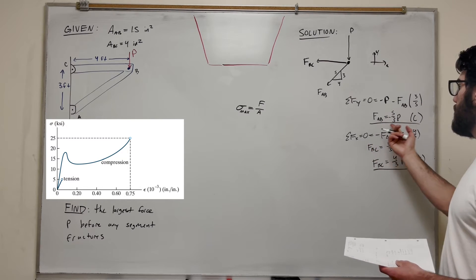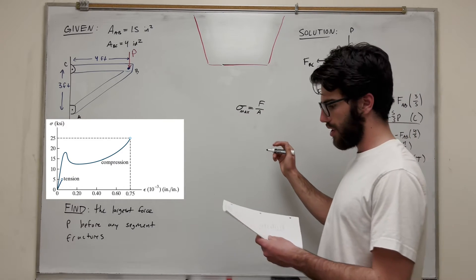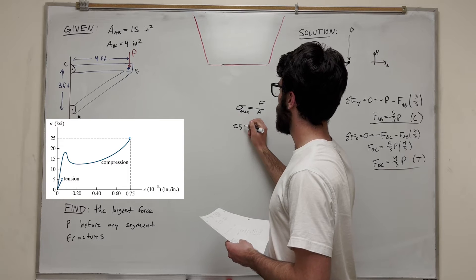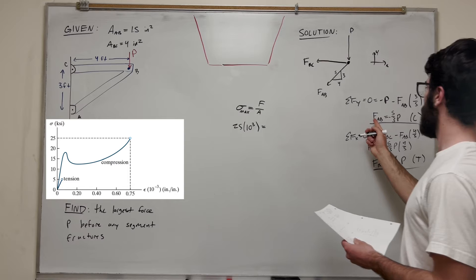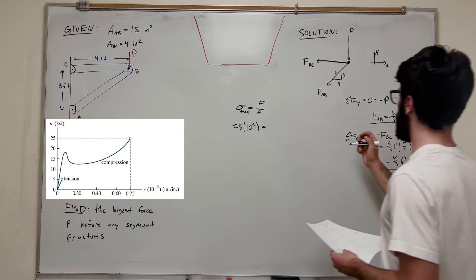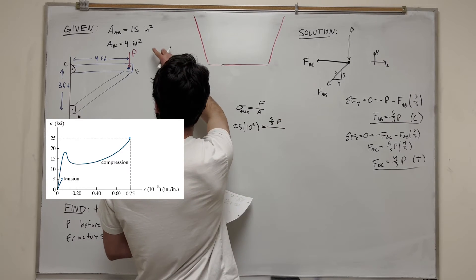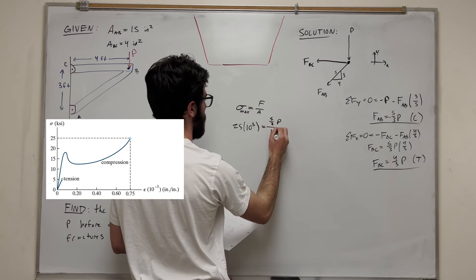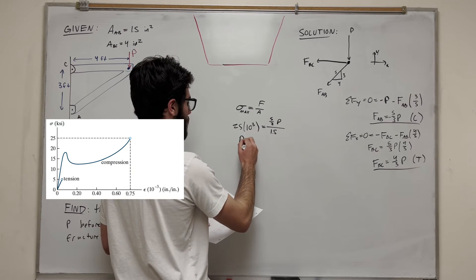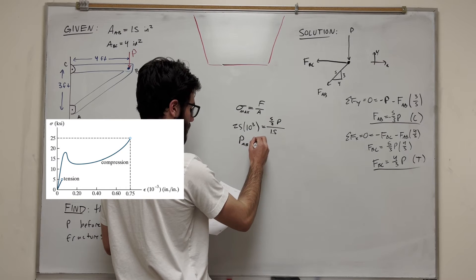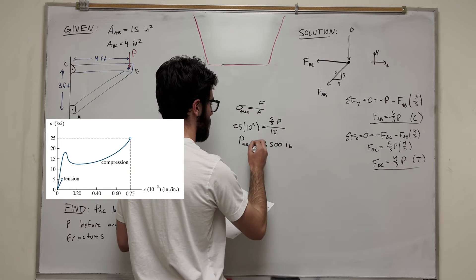Let's start with AB. AB is in compression, so it can go all the way up to 25 KSI before it breaks. So: 25 × 10³ equals force AB over area. Force AB is 5/3 P, and the area for AB is 1.5 inches squared. Solving this tells us that P, if AB were to break first, is 22,500 pounds. But that's not necessarily our final answer — we need to check force BC as well.